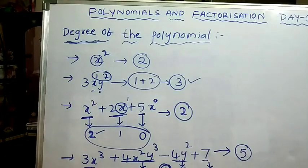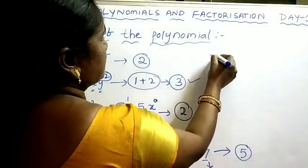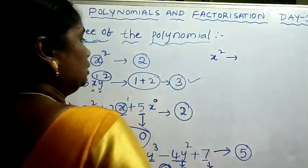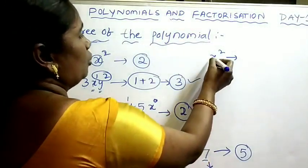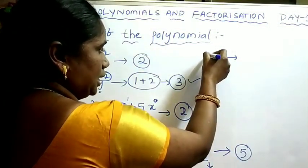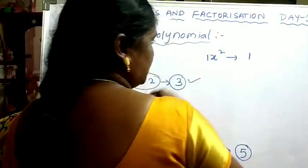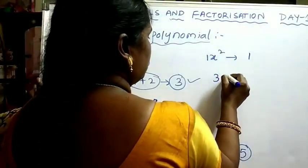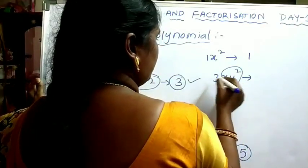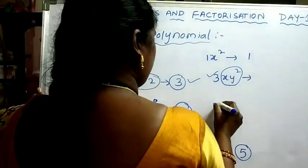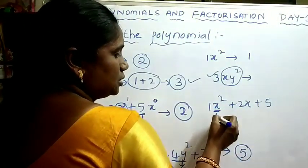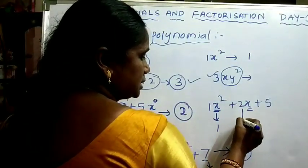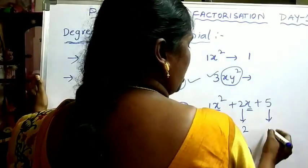Now we will learn about coefficients of a polynomial. The coefficient is the constant which we multiply with the variable in the given polynomial. For x², there is no visible constant, which means the coefficient of x² is 1. For 3xy², the coefficient of xy² is 3. In the polynomial x² plus 2x plus 5: coefficient of x² is 1, coefficient of x is 2, and 5 is the constant term.